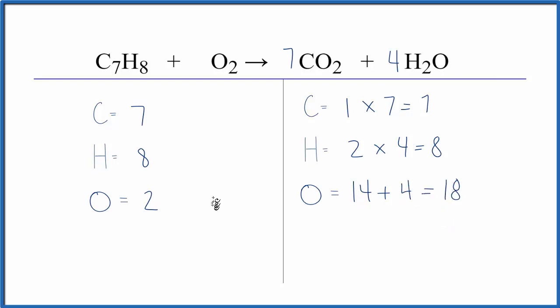Well, that's not too bad because now the oxygen, since it's by itself, I'll put a nine in front of that. Two times nine, that equals 18 and we're done. This equation is balanced.